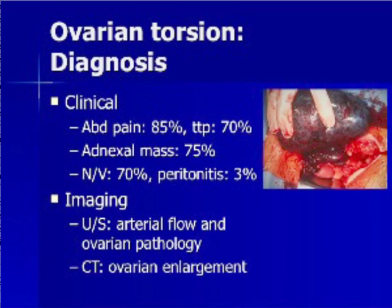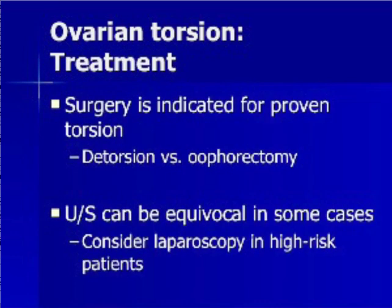CT scan is not a useful study to rule in or out torsion, can only provide information on ovarian size, and may result in substantial delays to diagnosis leading to devastating complications. The treatment of ovarian torsion is surgical. Operative detorsion rather than oophorectomy may result in ovarian salvage in early torsion. Patients who are at high risk for torsion should be considered for diagnostic laparoscopy to prove the absence of torsion despite the absence of abnormal ultrasound findings.